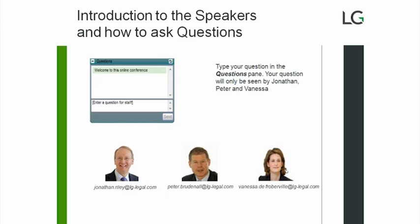Vanessa will first look at the principles of how loss is measured and the contractual damages recoverable under English law. Then Peter will look at alternatives to ordinary damages claims — namely liquidated damages and service credits — explaining what they are, how they operate and when to consider using them. Finally, I will consider contract termination, focusing on key termination events and the consequences of termination.